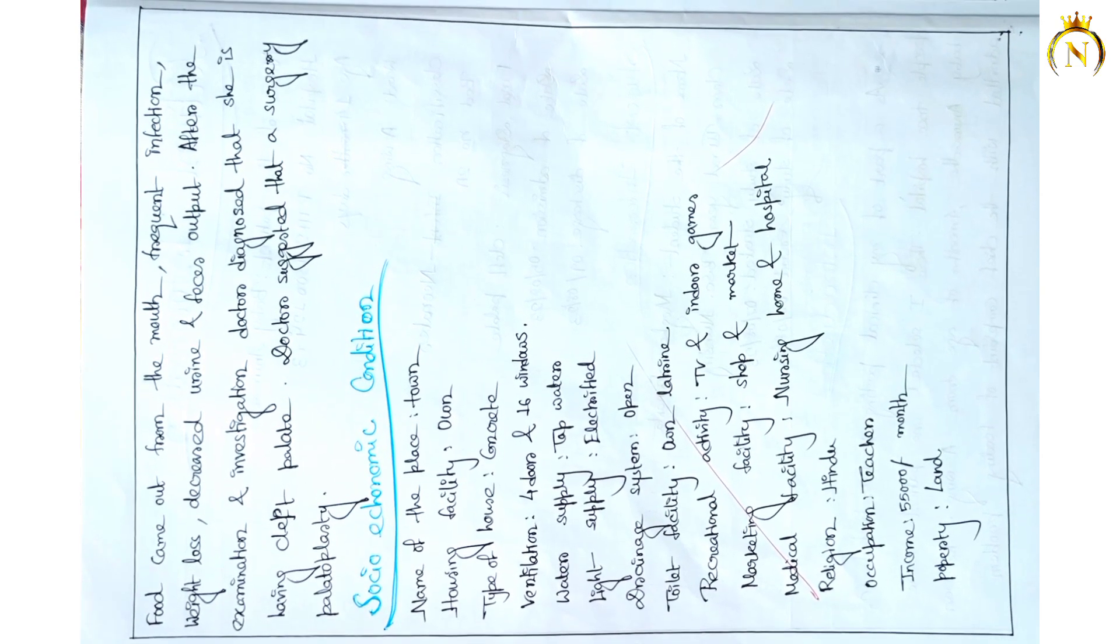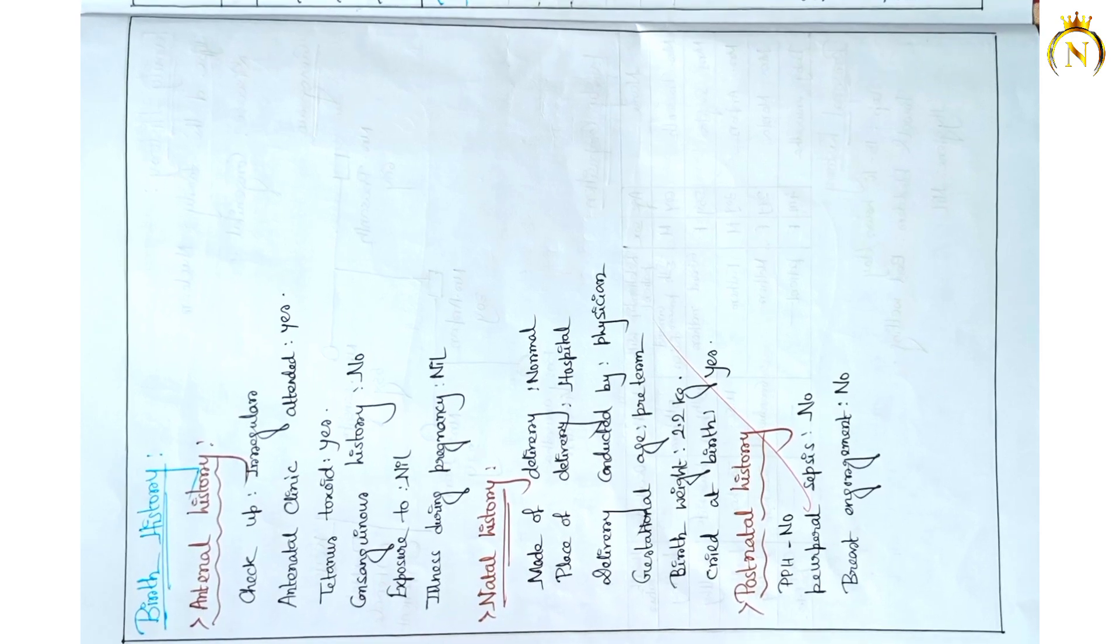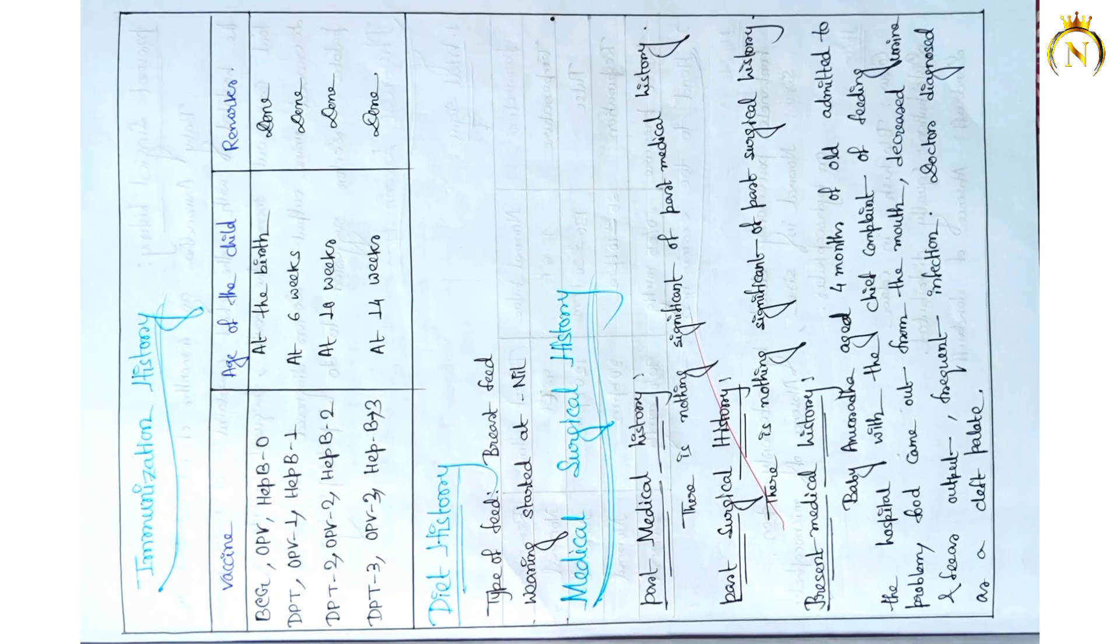Check the socioeconomic condition of the family. You have to collect data from the family, then family history, family composition, obstetric version history also you have to mention regarding the mother and father birth history.